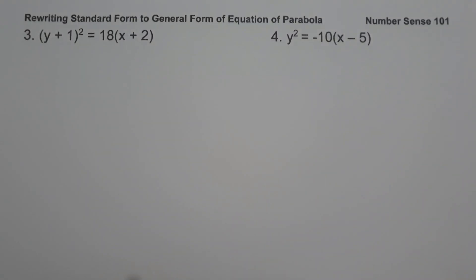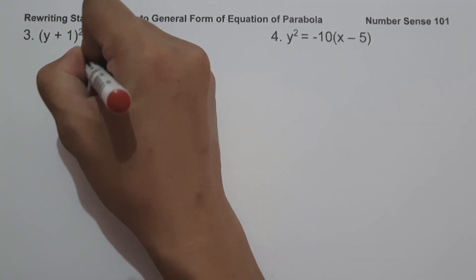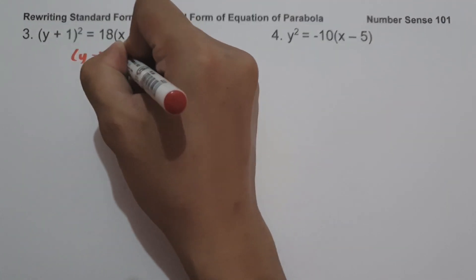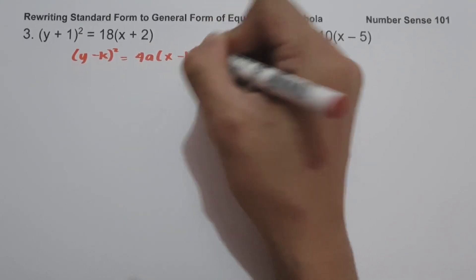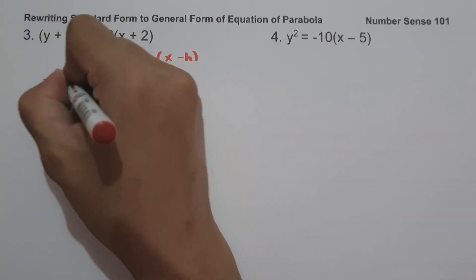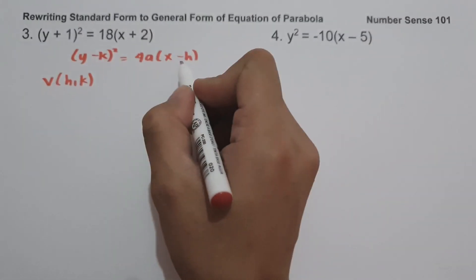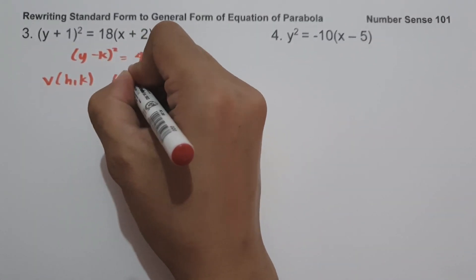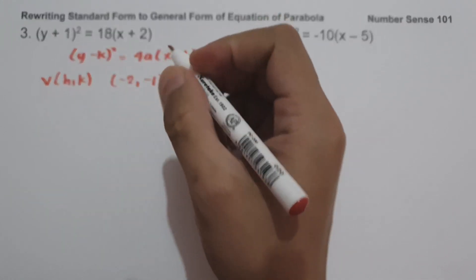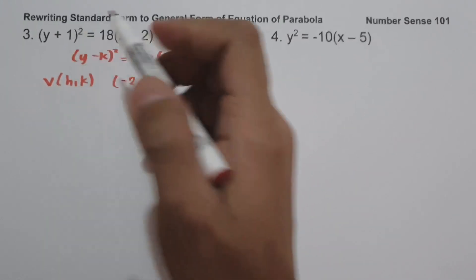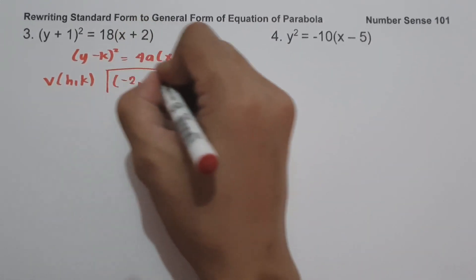On example number 3, we have (y + 1)² = 18(x + 2). Since the equation is written in the form of (y − k)² = 4a(x − h), the vertex is h and k. The value of h is negative 2, and k is negative 1 — we take the opposite sign of positive 2 and positive 1. And this will be our vertex.